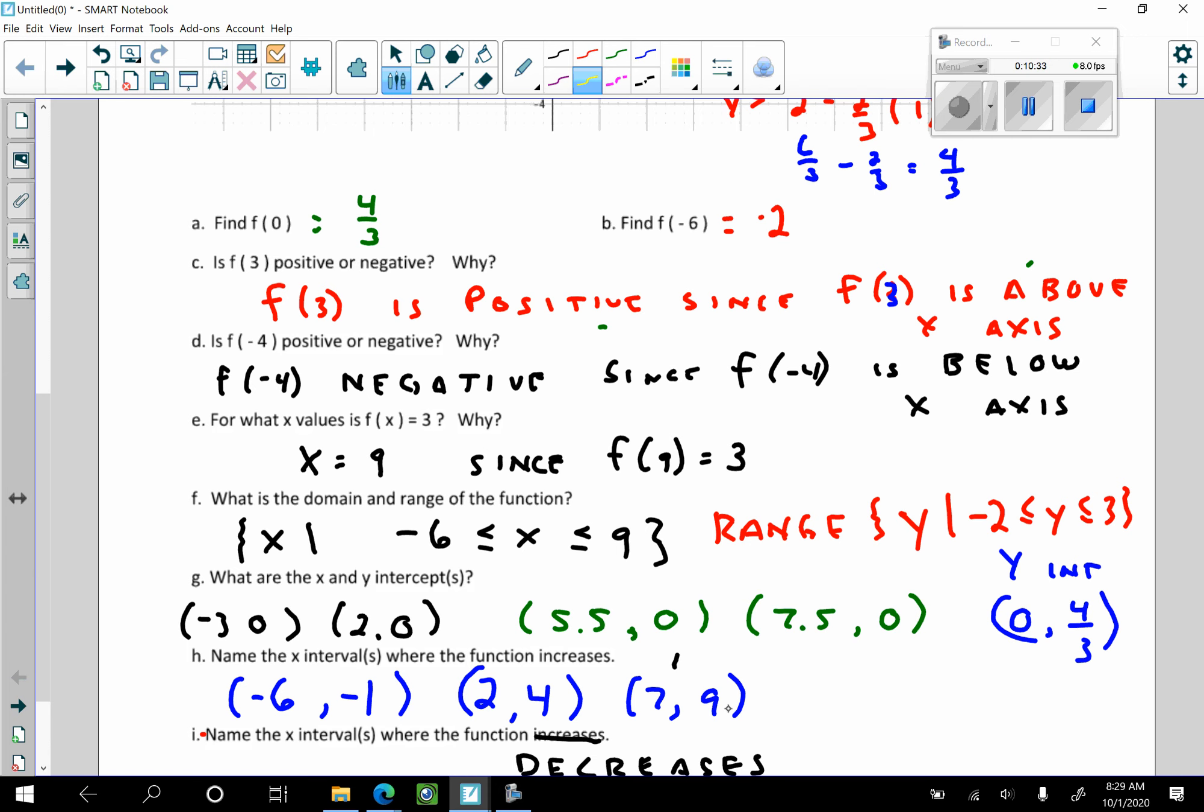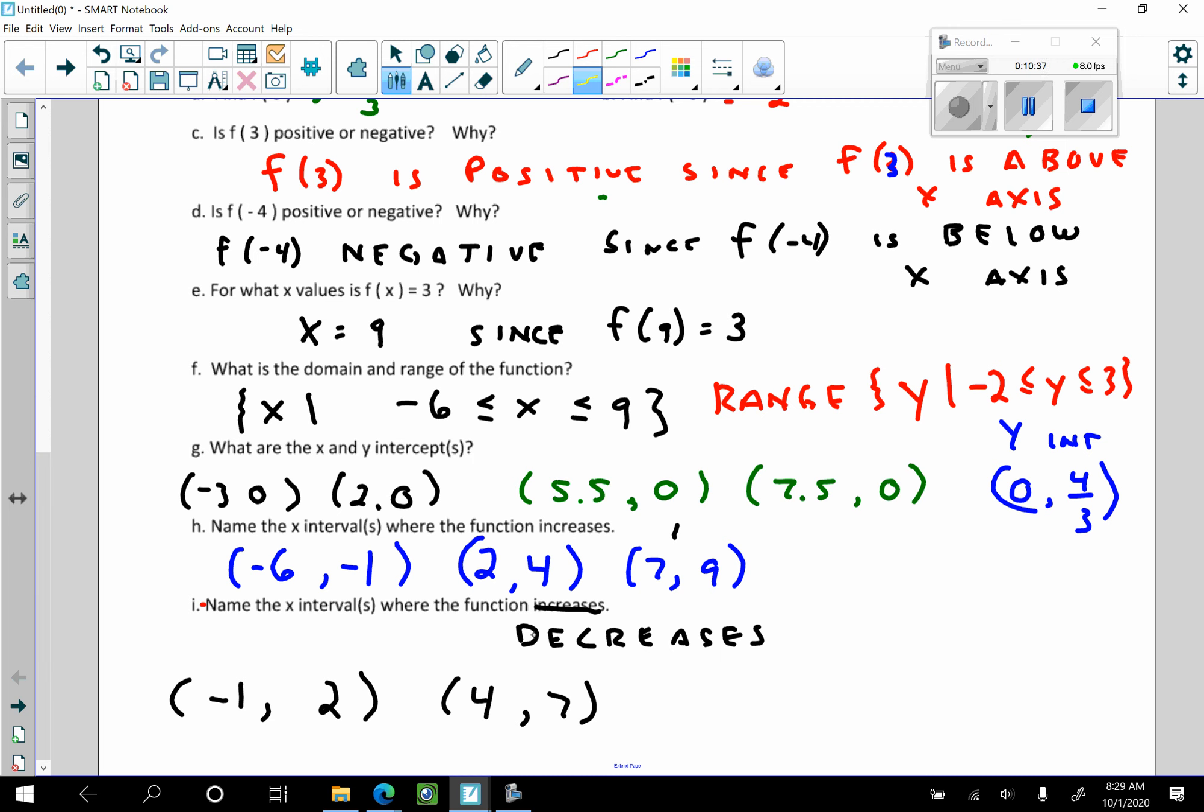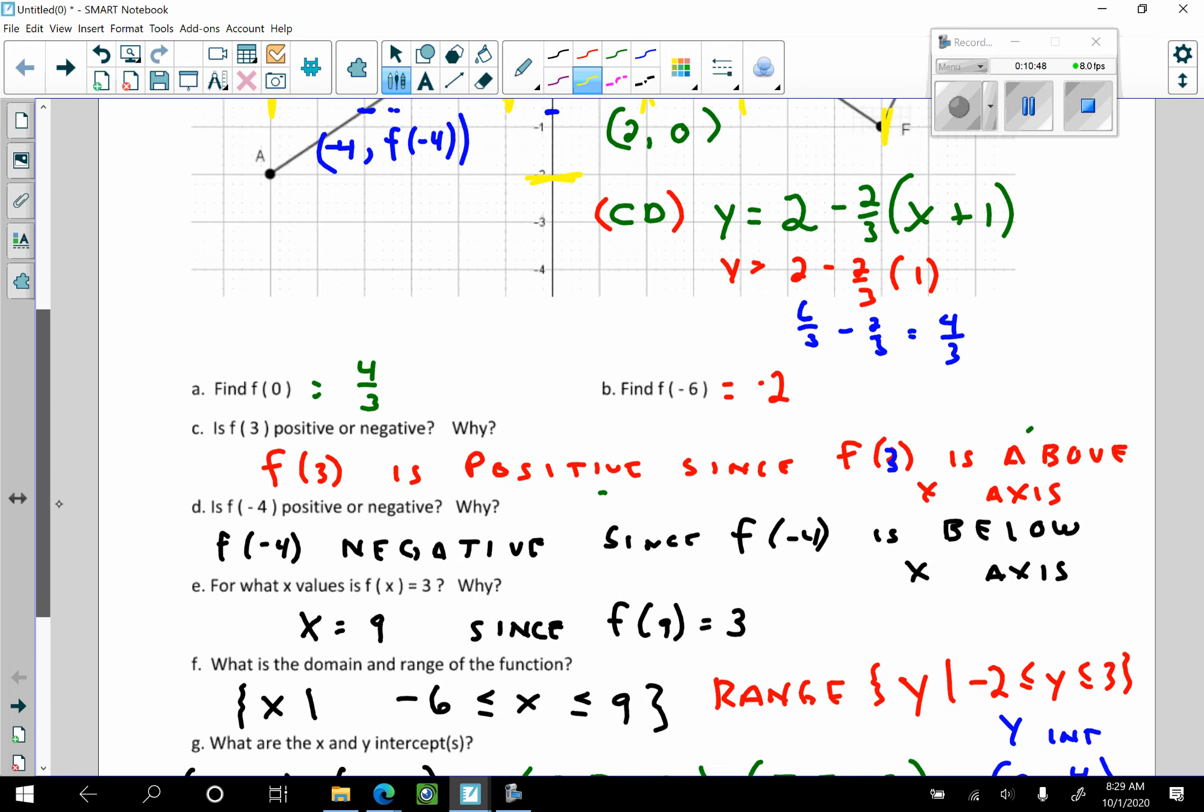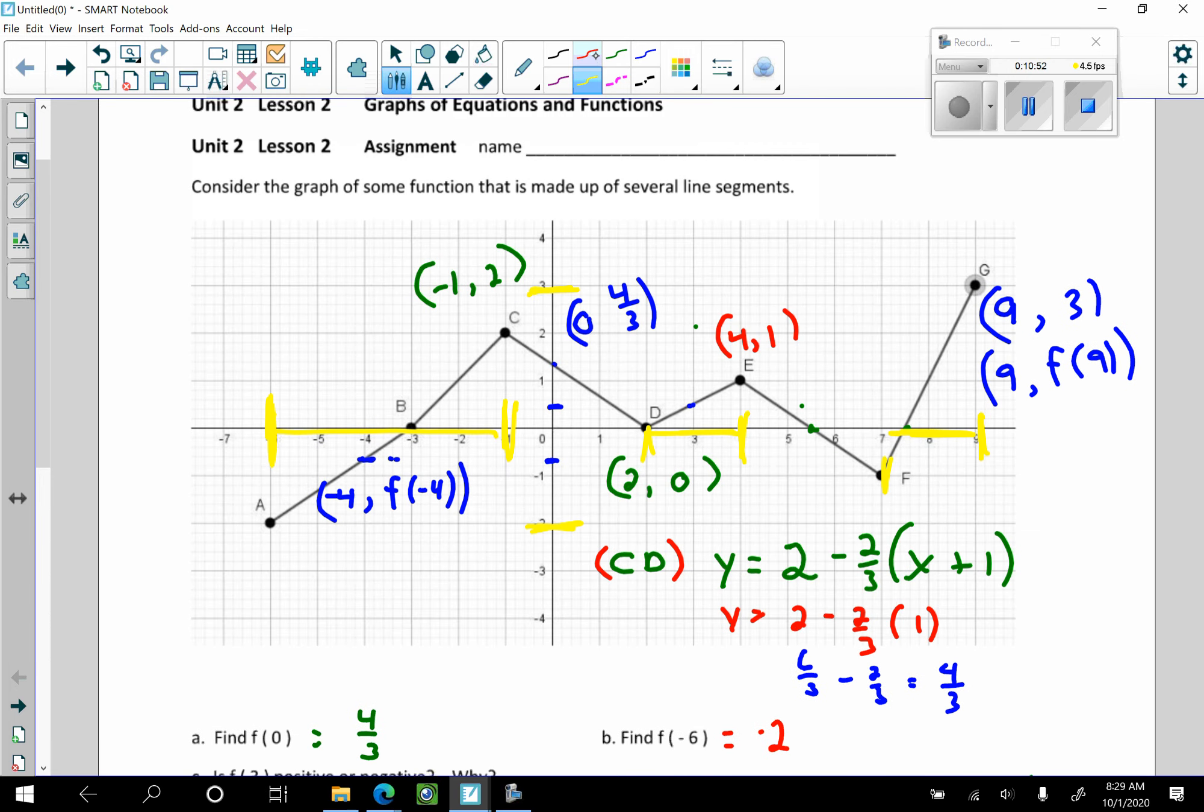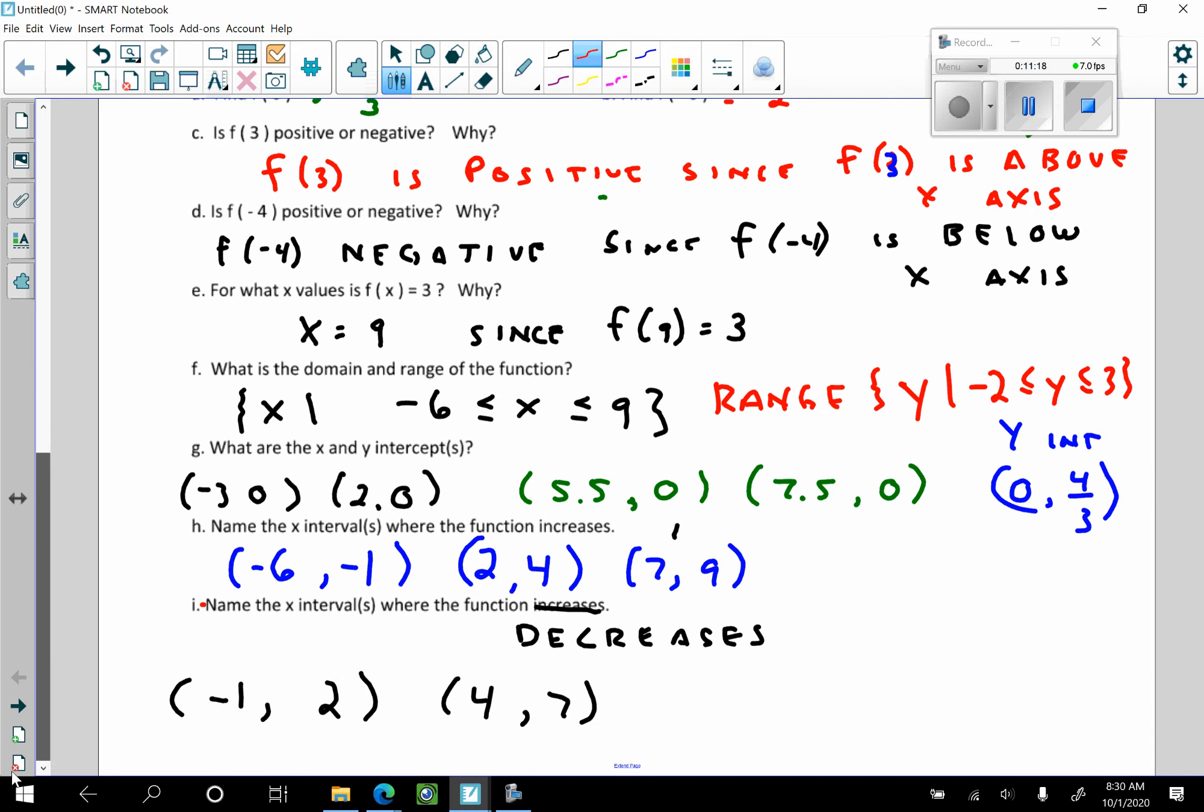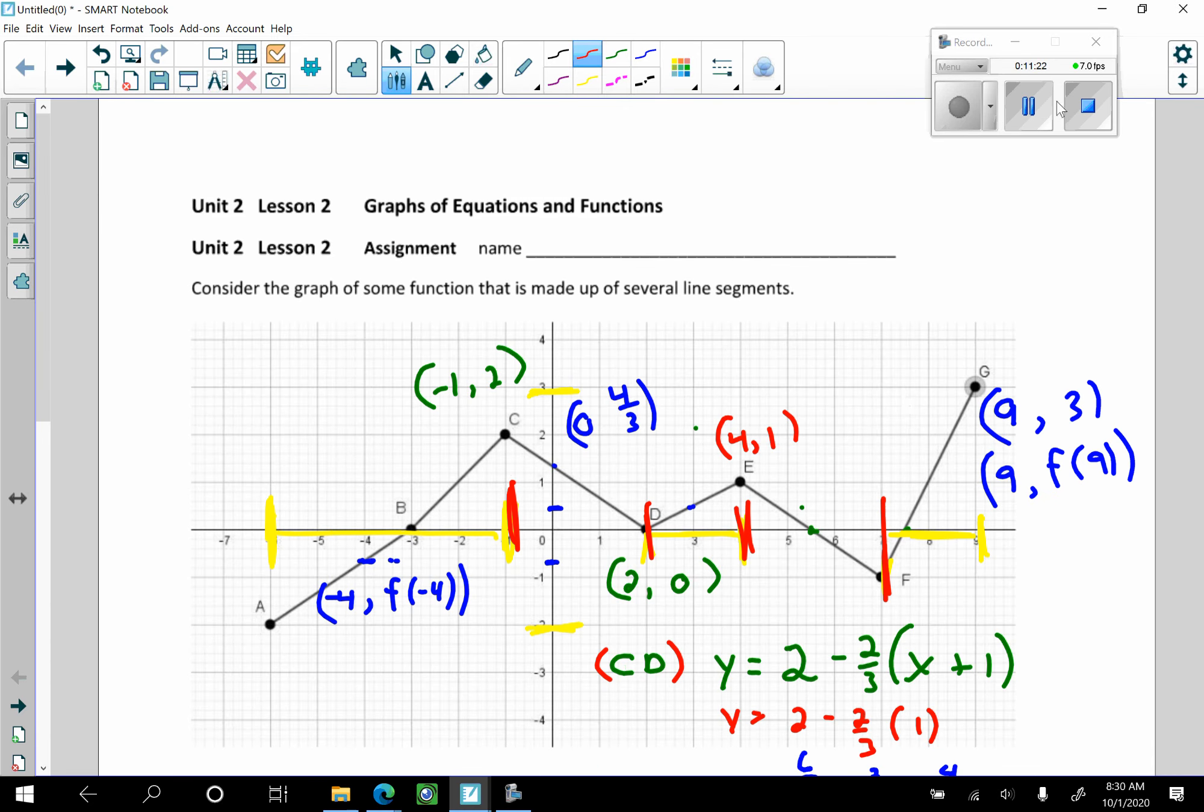Now there was a typo on this particular assignment. And the typo was, I didn't want to ask the same question twice. Name the X interval where the function decreases, i.e., going down, i.e., when the X increases, the Y's decrease. And I think this guy decreases from here to here, and from here to here. Can you do that on an assessment? I think you can. Is there another question over that?